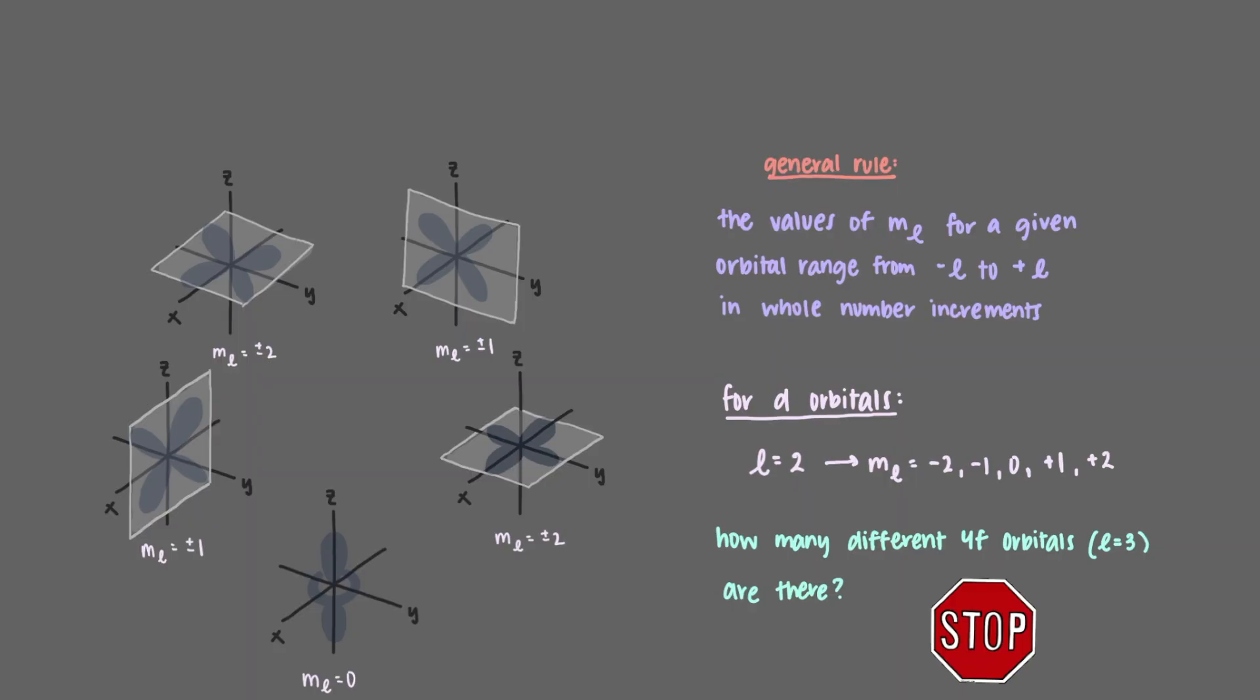How many different 4f orbitals, l equals 3, are there? There are 2l plus 1 equals 7 different 4f orbitals.